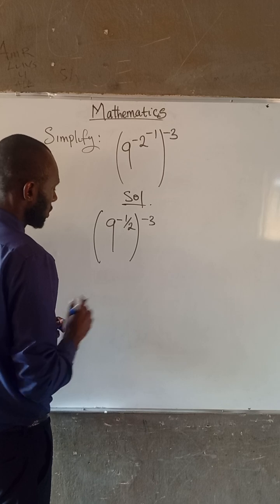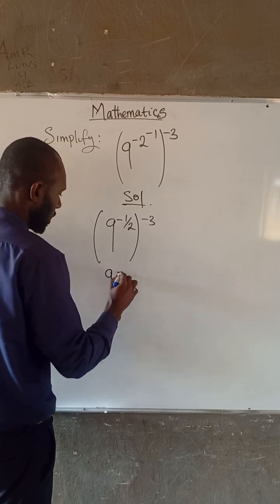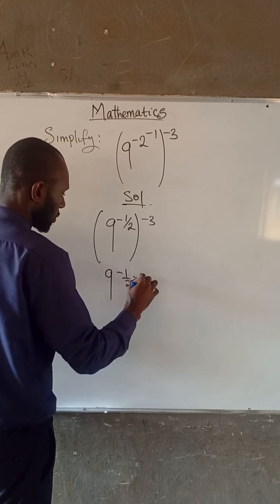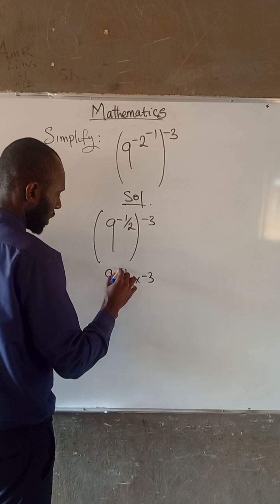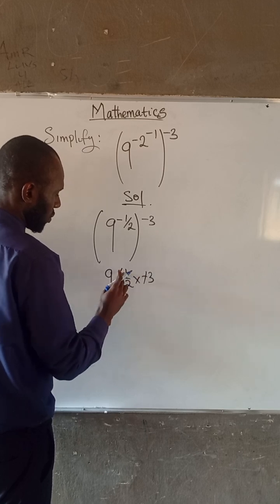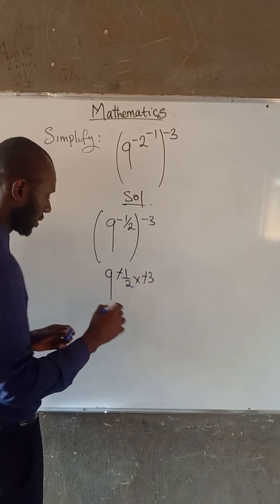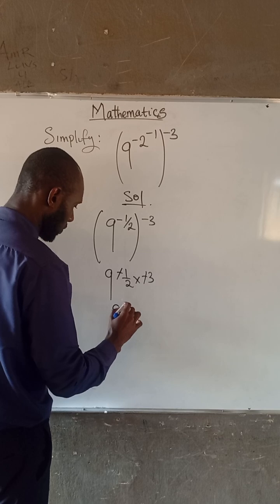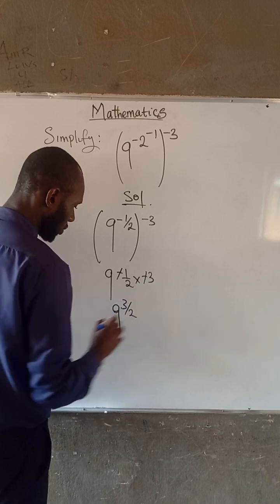So at this point, this is 9 to the minus 1 divided by 2 times minus 3. So minus 1 times 3 is 3. So we have 9 to the power of 3 divided by 2.